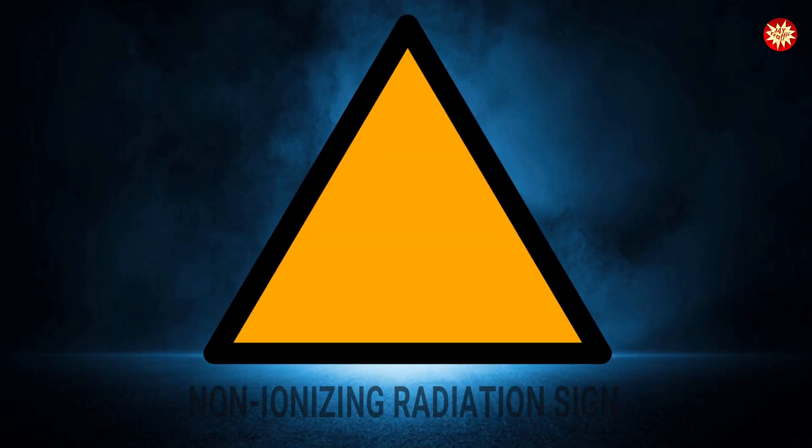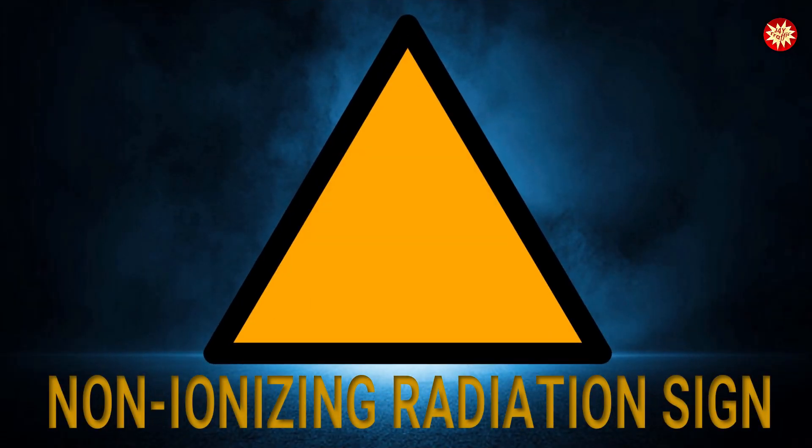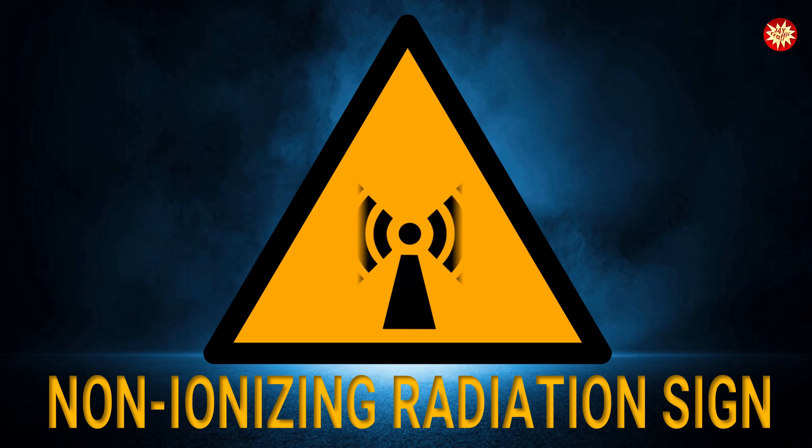Ever wondered about those yellow signs with black symbols? Well, that's the international symbol for non-ionizing radiation. The concentric circles represent radiation energy in a non-ionizing form. The yellow background screams caution, while the black symbol ensures visibility. The black border adds an extra warning touch.